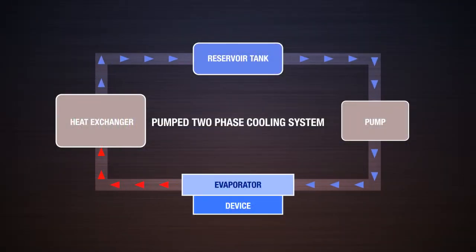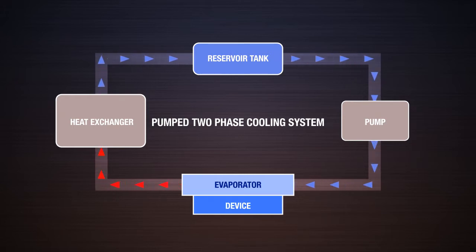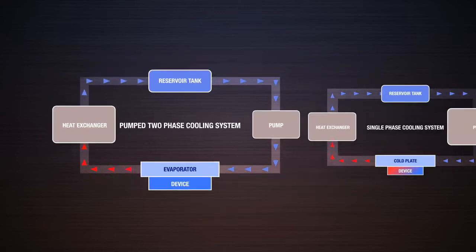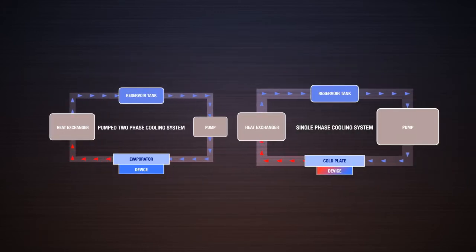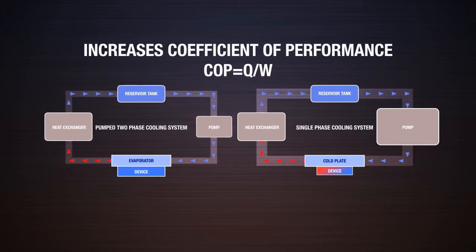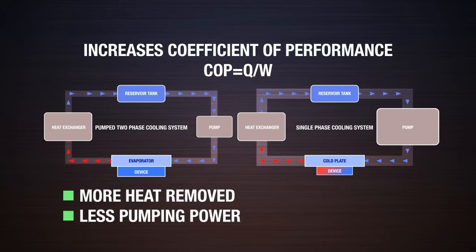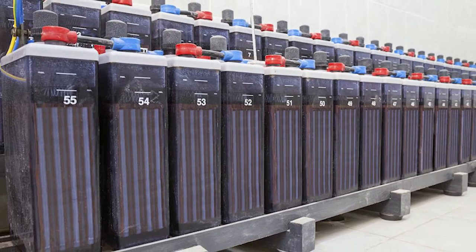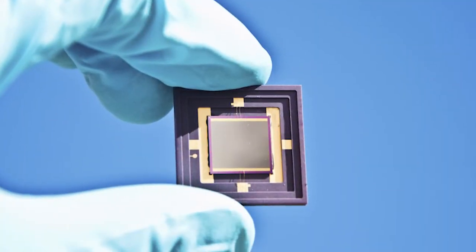Another key advantage of pumped two-phase or evaporative systems is they do not require high coolant flow rates. As a result, smaller pumps requiring less power and weight can be used to remove higher amounts of heat, in effect increasing the coefficient of performance, or COP, of the cooling system. This means more heat can be removed over a given surface with less pumping power.